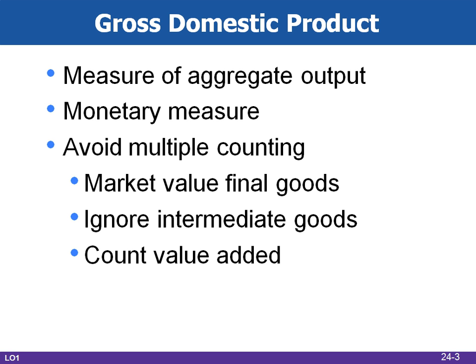Purely financial transactions are excluded because nothing new is created — assets are simply being transferred to new owners. Examples of transfer payments include public transfer payments such as Social Security, welfare, and veterans benefits, and private transfer payments such as allowances or cash gifts. The sale of stocks and bonds would not be counted in GDP since you are repurchasing something that's already been sold, though the broker's fee for services rendered would be counted.